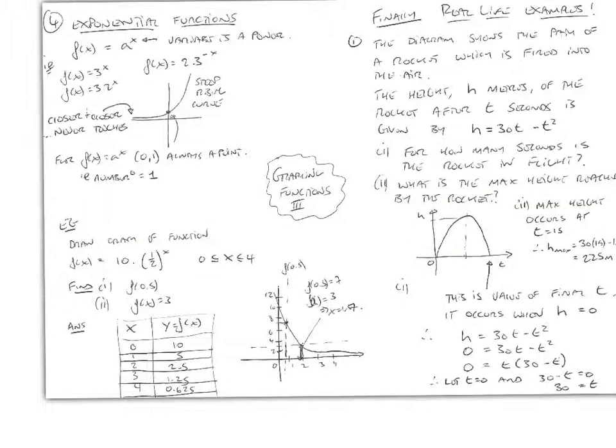And we're coming towards the end now, but we met with exponential functions. These are functions in the form of a to the power of x, where the variable is a power. So, f(x) equals 3 to the power of x. f(x) equals 3 times 2 to the x. f(x) equals 2.3 to the minus x. All examples of exponential functions.